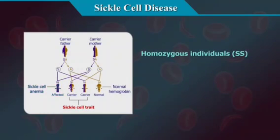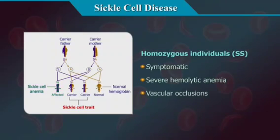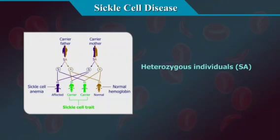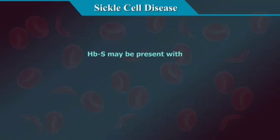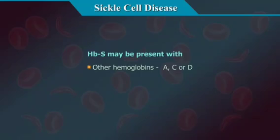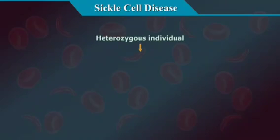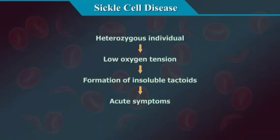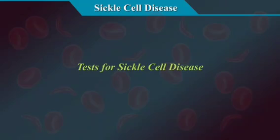Homozygous individuals commonly exhibit symptoms of severe hemolytic anemia and/or vascular occlusions, while heterozygous individuals are usually asymptomatic. HBS may be present with other hemoglobins such as hemoglobin A, C, or D, or with thalassemia — a condition that interferes with the synthesis of normal hemoglobin. Under conditions of low oxygen tension, heterozygous individuals can develop acute symptoms due to the formation of insoluble tactoids.